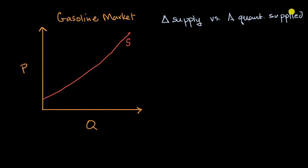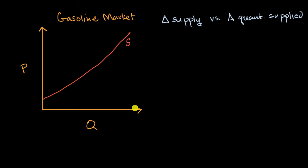Just as a bit of a review — we've talked about it in other videos — supply is referring to the entire supply curve, and this curve right over here has a typical shape of a supply curve following the law of supply. At low prices, suppliers would provide low quantities, and at higher prices, suppliers would provide higher quantities.